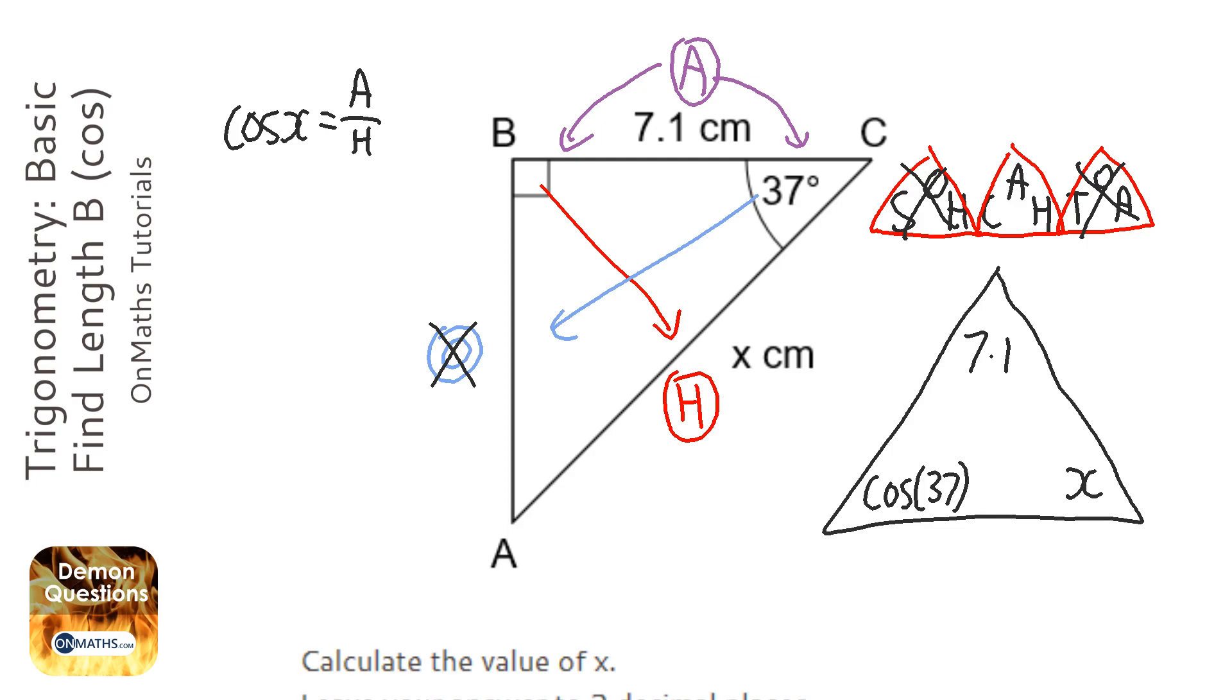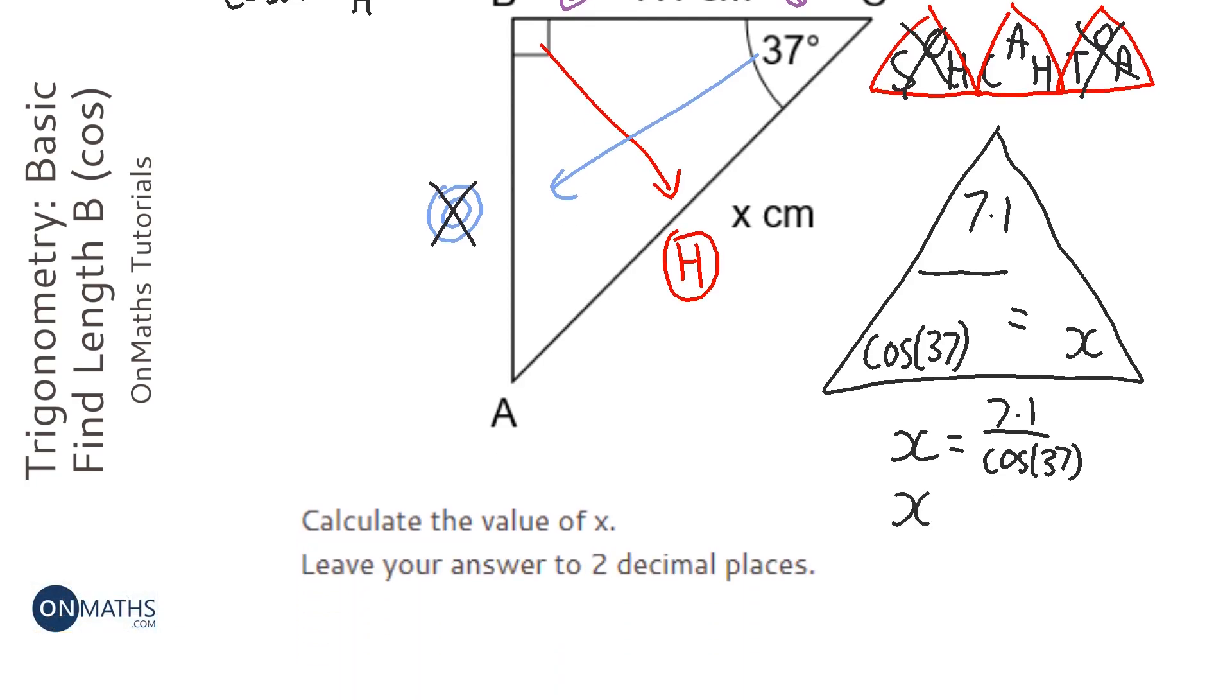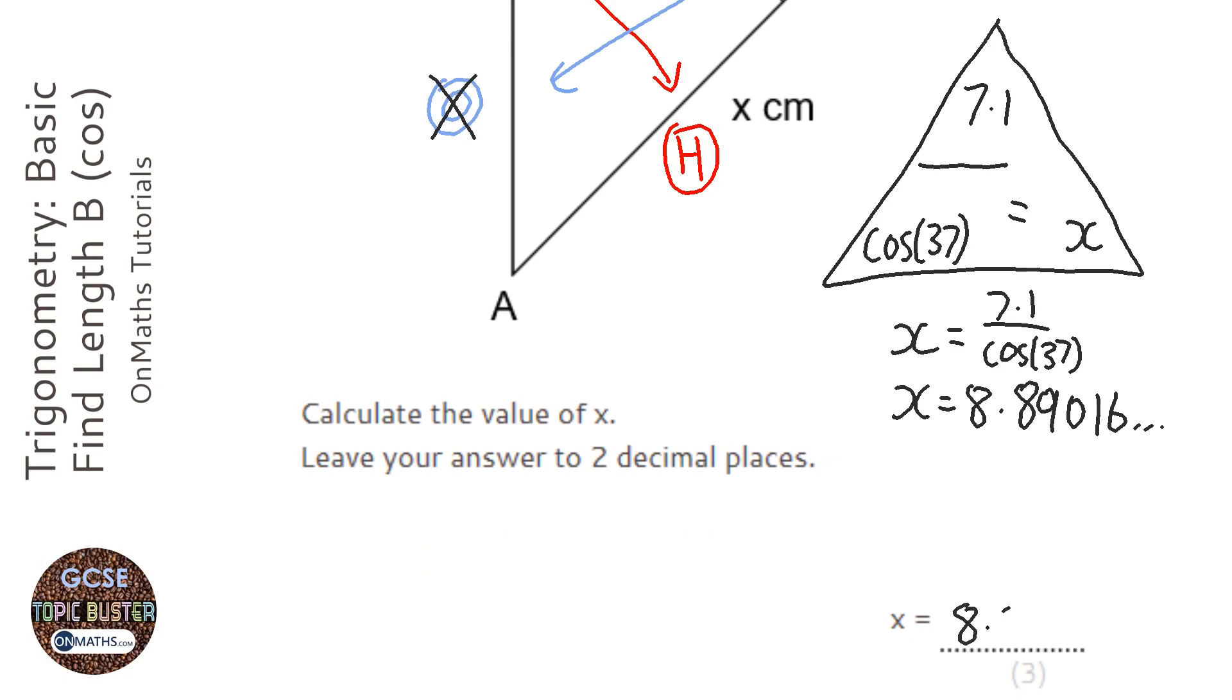And the H at the bottom is x. And the way you're using this triangle is whenever you're finding the bottom right one, you do the top one over the bottom left one. So that's going to be x equals 7.1 over cos 37. Now, when you type this into your calculator, you press the fraction button, then 7.1. Use the cursor key to go downwards. Type in cos 37, but make sure you close the bracket. The calculator will say it's an error unless you close the bracket. And when I do that, I get 8.89016 blah blah blah. To two decimal places, that's going to be 8.89.